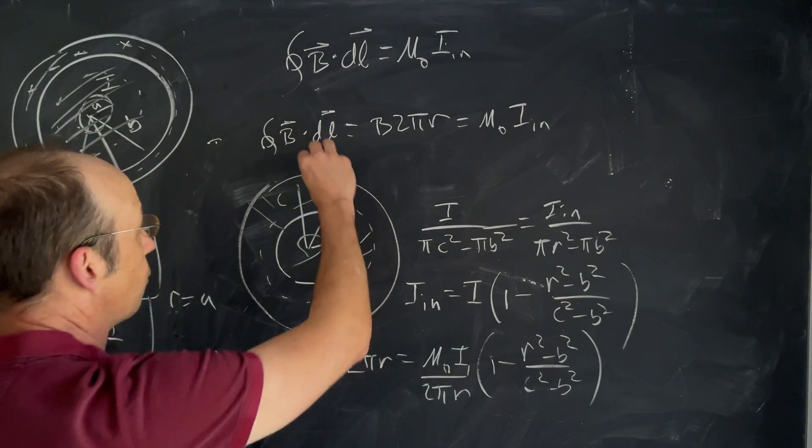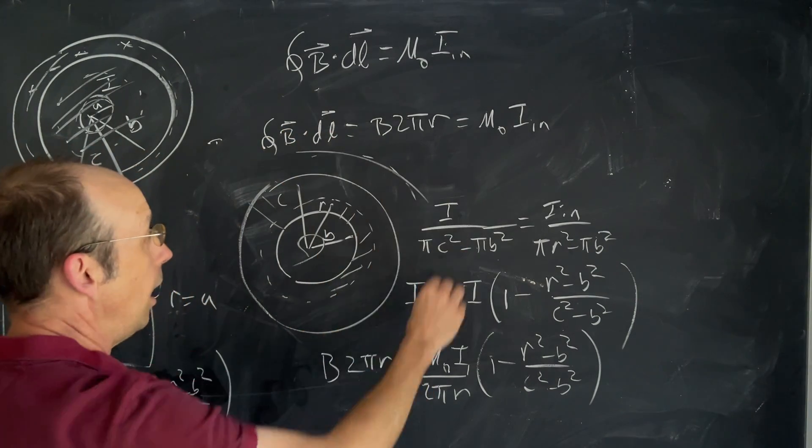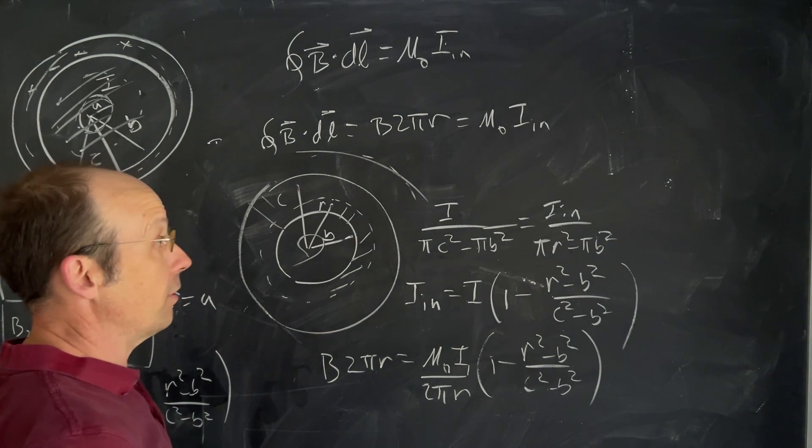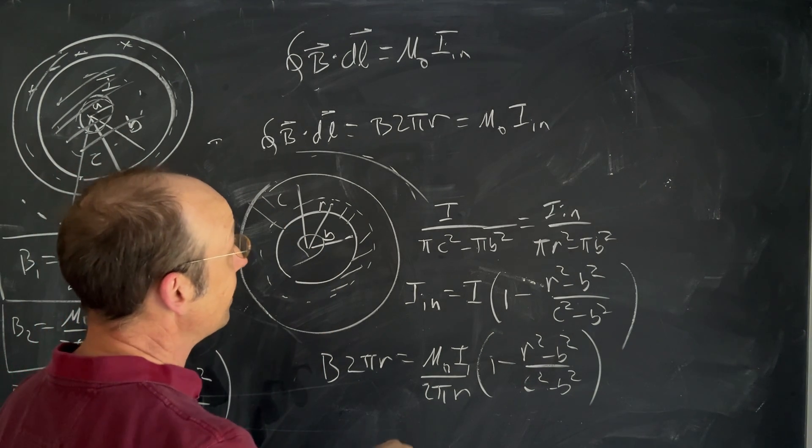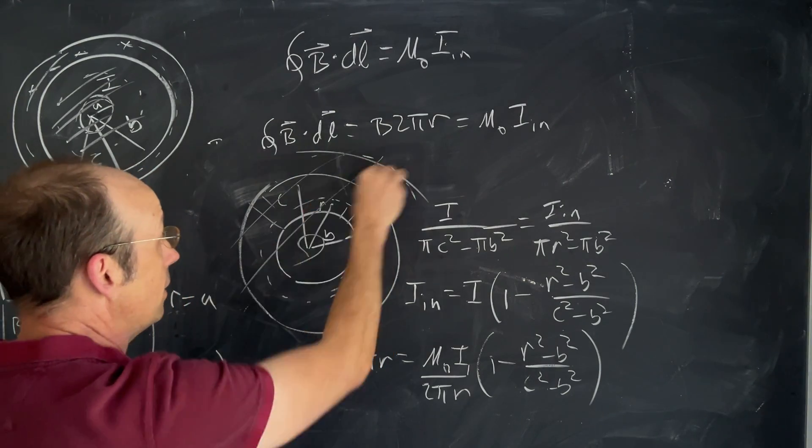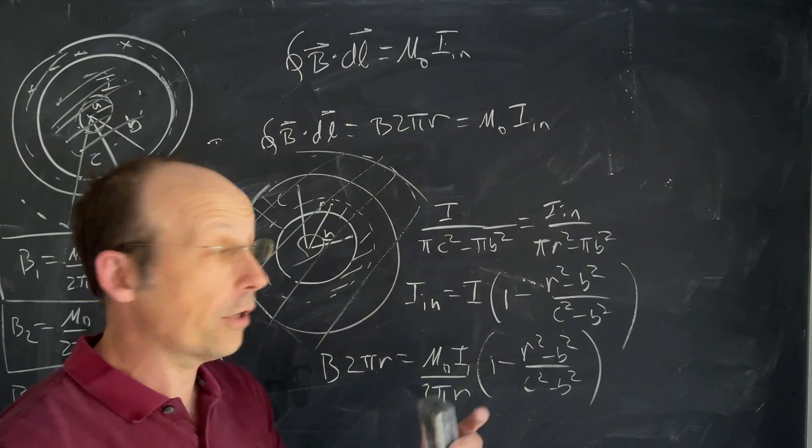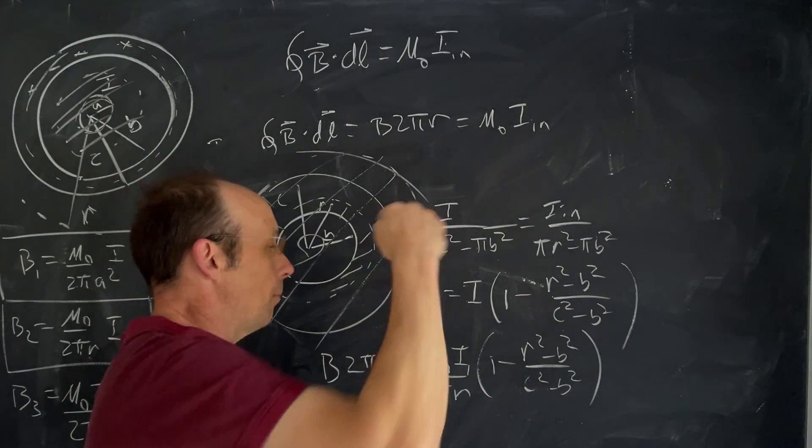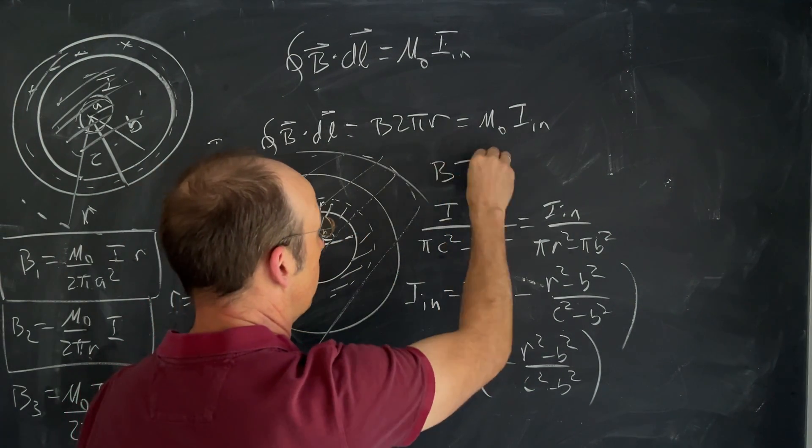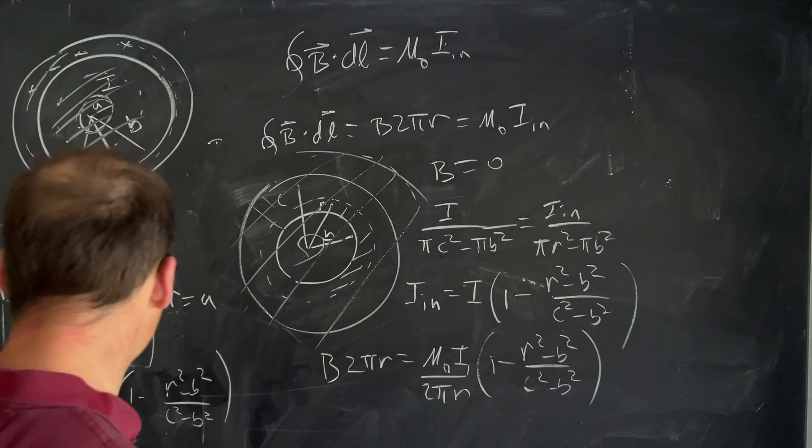Now for finally, the easiest one over here in region four. Again, I'm going to assume that B is constant with R and in the direction of the path. In that case, the key thing here is what's IN? Well, it doesn't matter what my path is, but IN is going to include both the current coming out and the current coming in. And so IN is zero. So B is zero. So that's my fourth region.